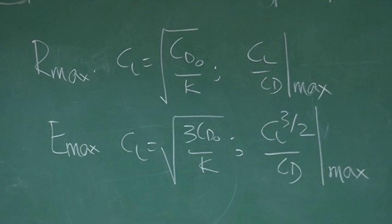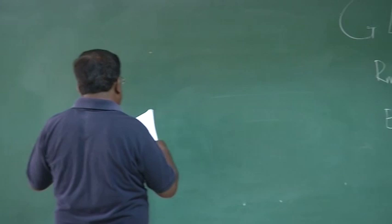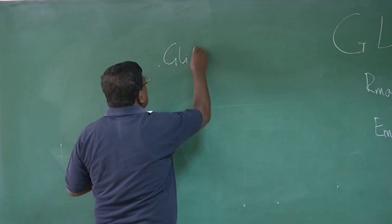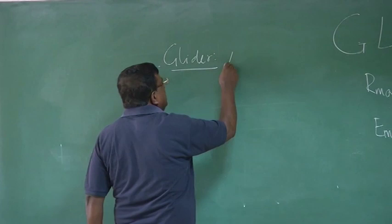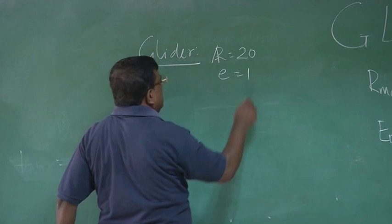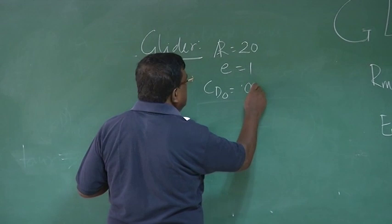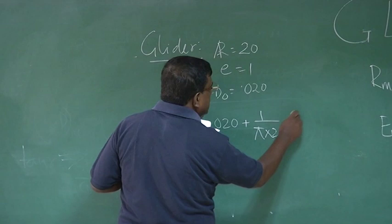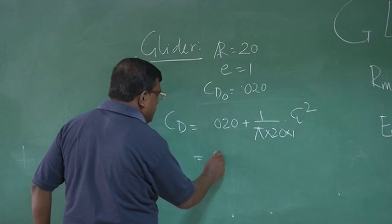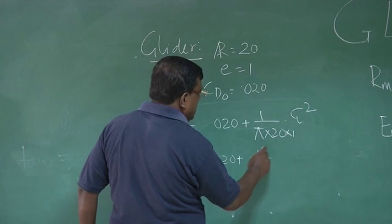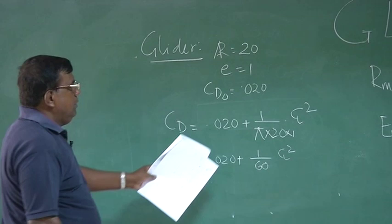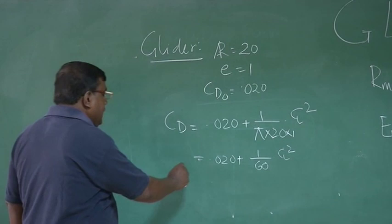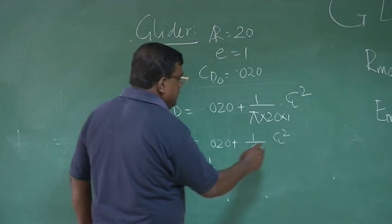Let us take a typical example. Let us say we are talking about a glider. Take a case of a glider where the aspect ratio is around 20. Let us say E is 1 for simplicity. And let us say CD naught for the glider is 0.020. So if I write the drag polar, it is 0.020 plus 1 by pi aspect ratio is 20 into E CL square. This is a very rough value. See 1 by 3.1416 into 20. So 1 by 60. So what is the value of K? K is 1 by 60, because approximately like this. Because CD naught plus K CL square.